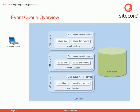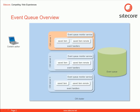When a content author changes an item, a request is sent to a specific CM server. The CM server receives and processes the request. This results in the Saved Item event being triggered.